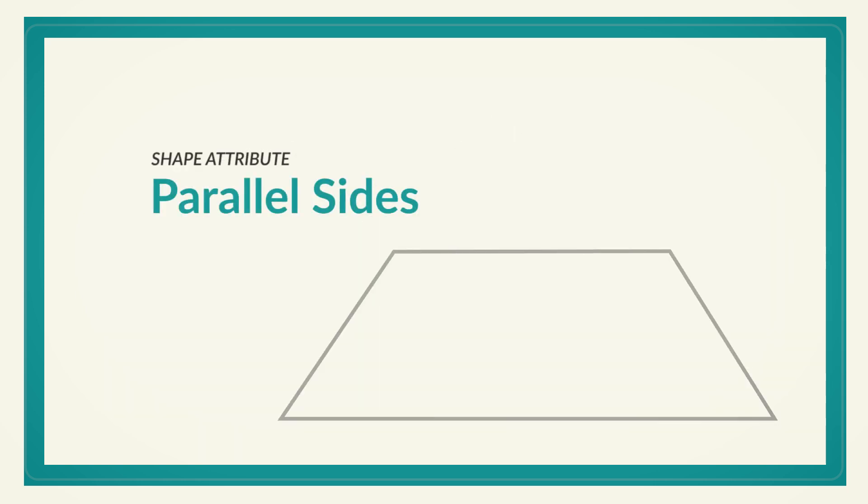Shape Dance is a game you can keep playing with older kids by giving more challenging hints, like: find a shape that has two sides that are parallel like train tracks. They would need to find a square, rectangle, trapezoid, or other shape with two parallel sides.